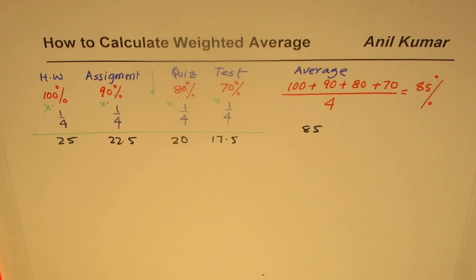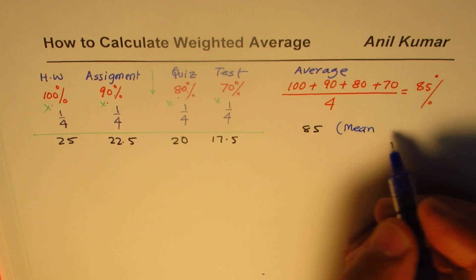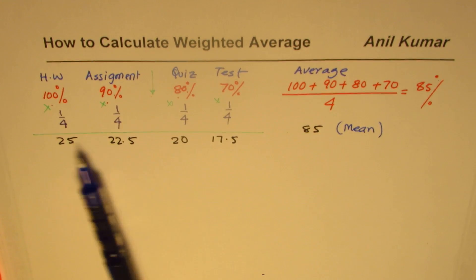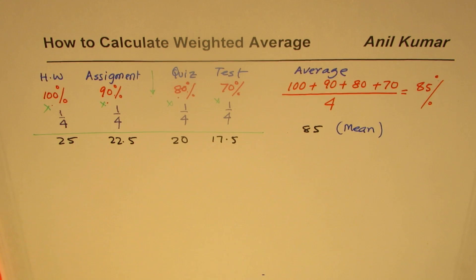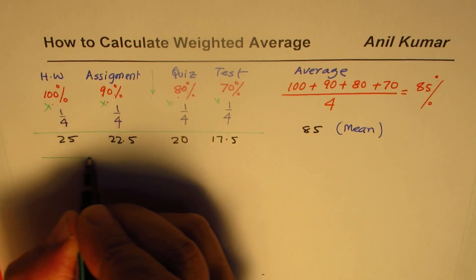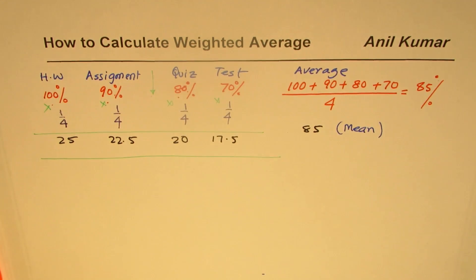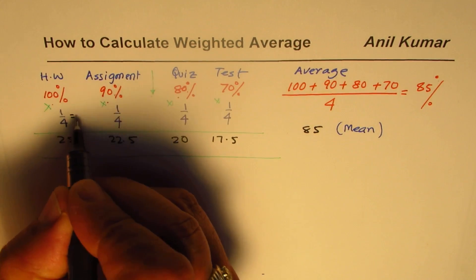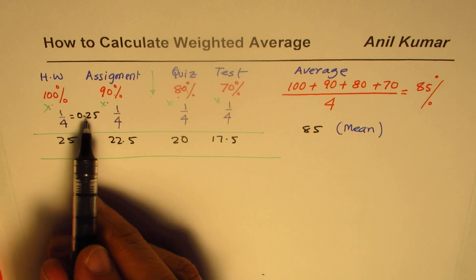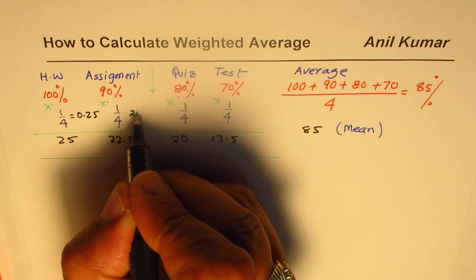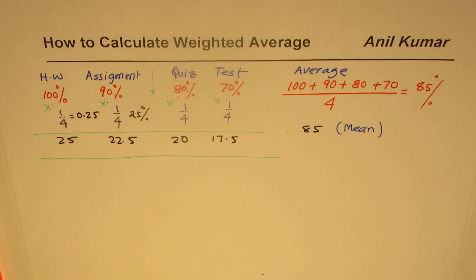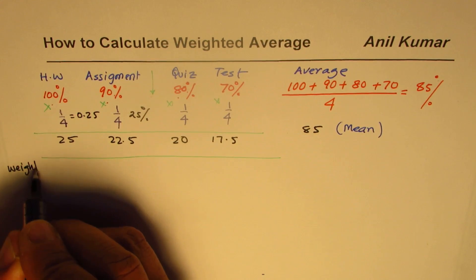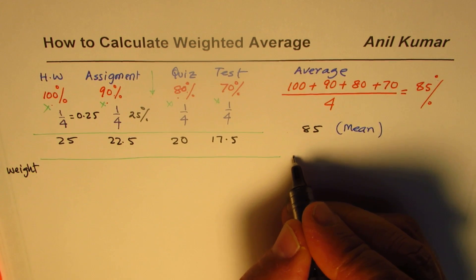When we take a normal average or mean, the mean value is always somewhere in between. But practically, weights are not the same — no one gives the same weightage to homework as to the final test. So now we introduce percent weight, meaning the importance or significance of each component is different.